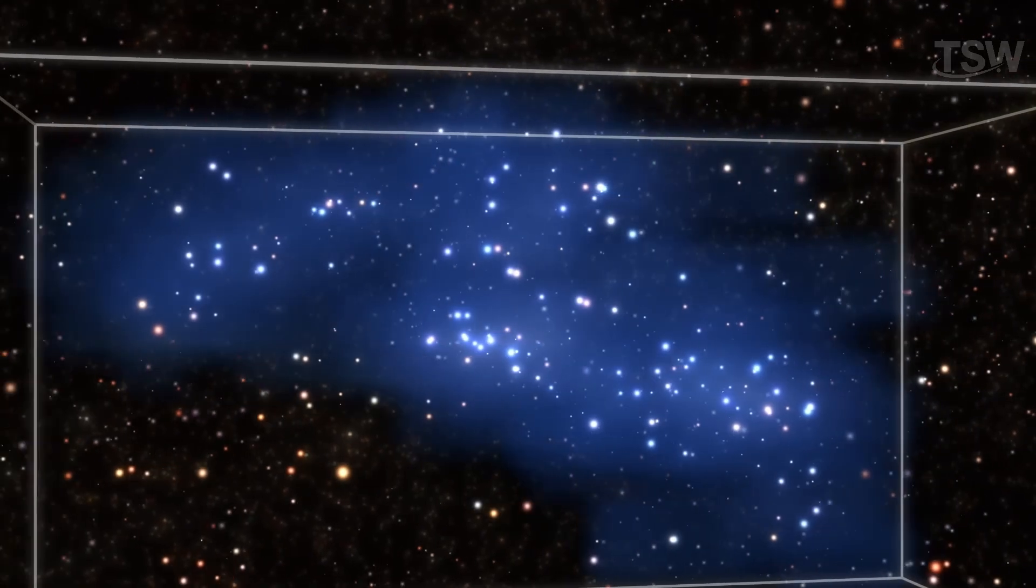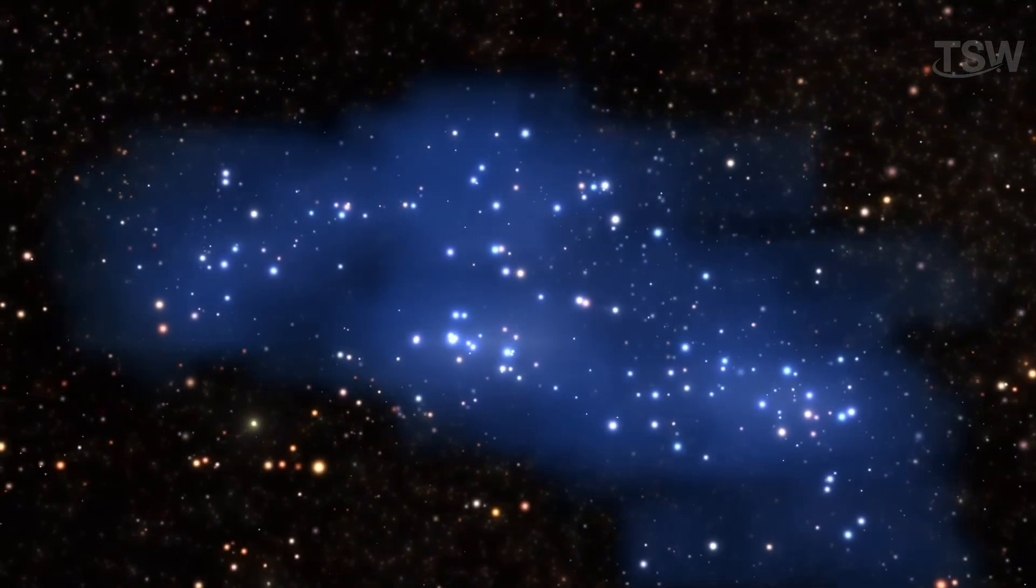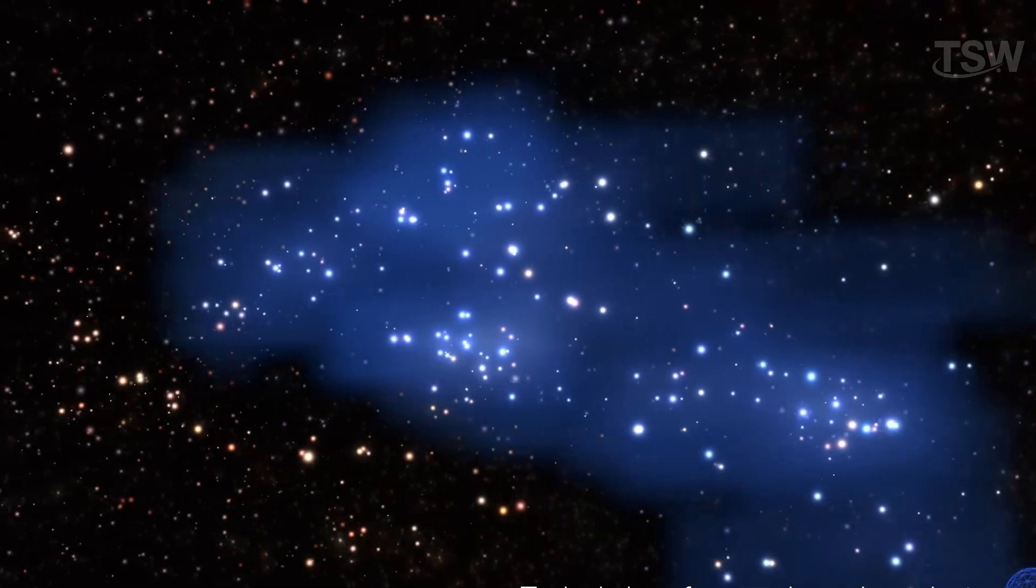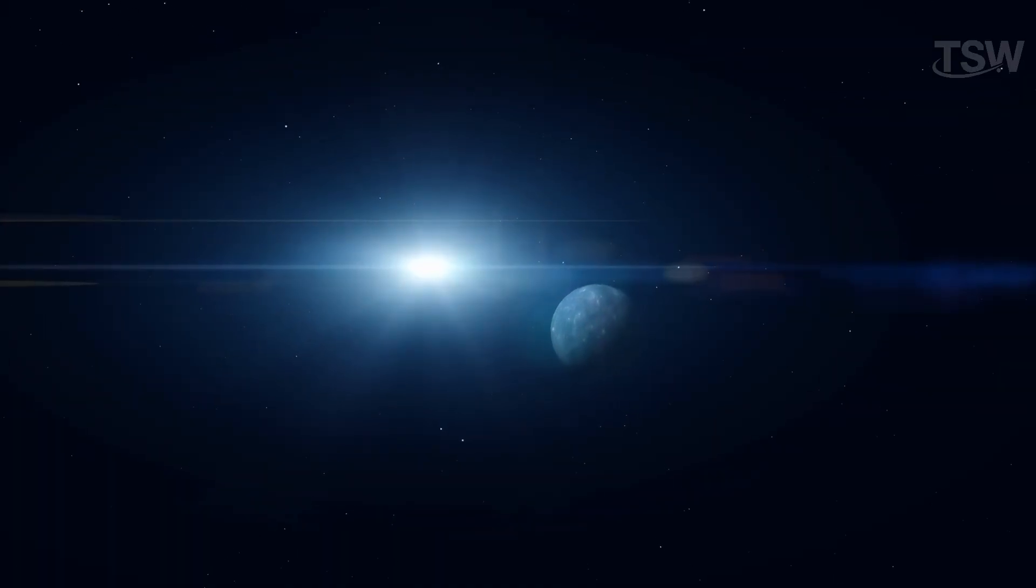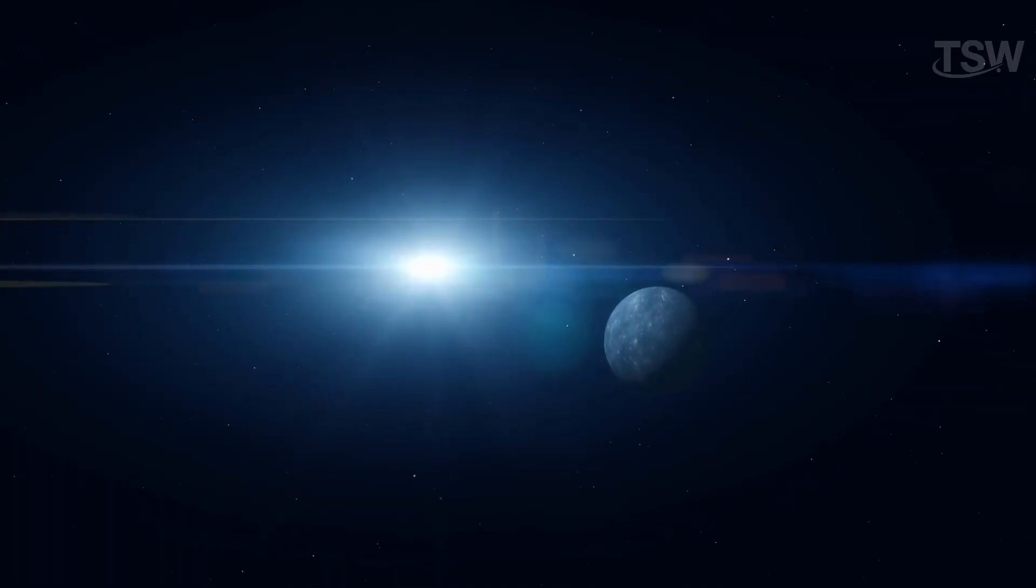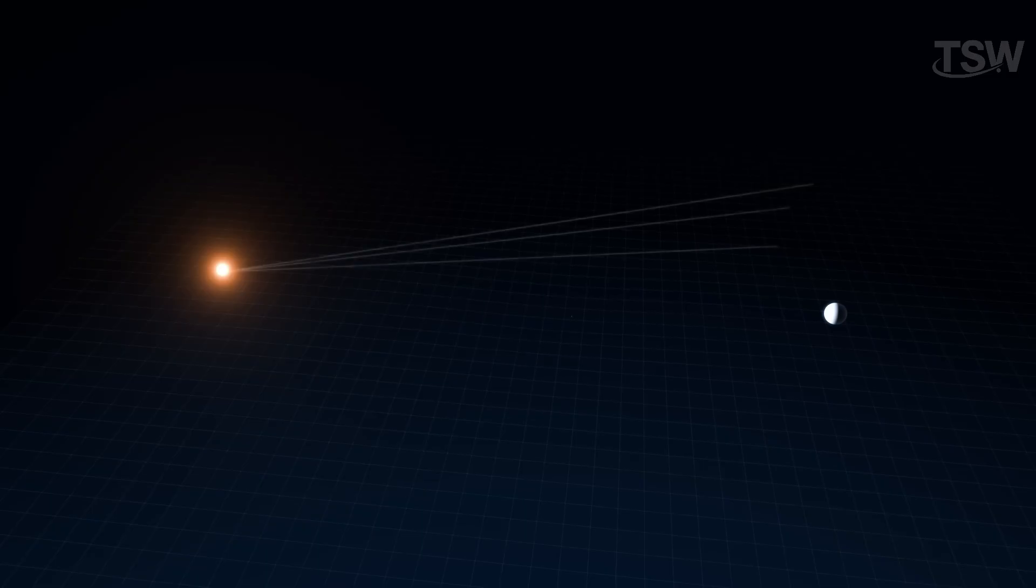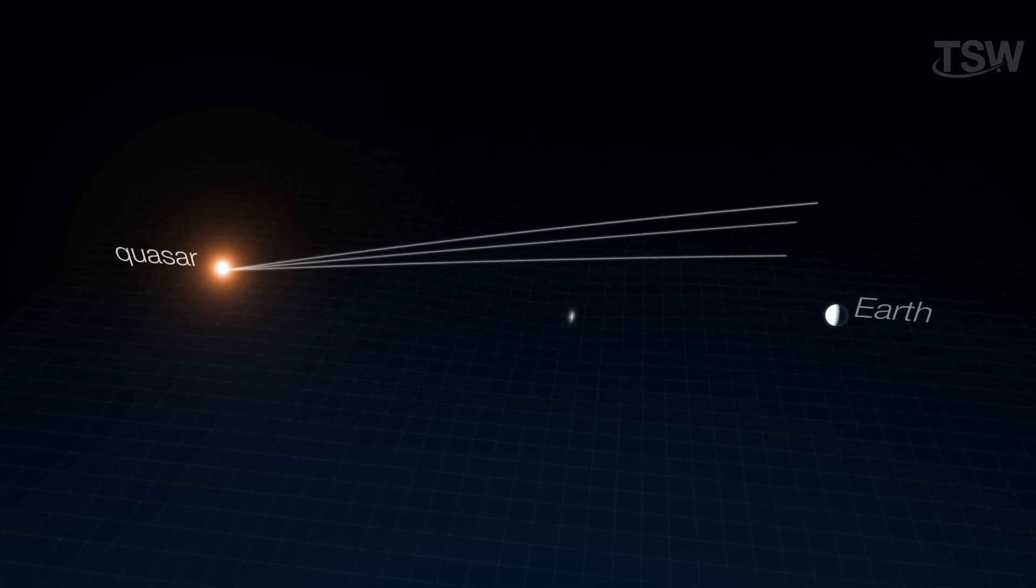When astronomers analyze how light from distant galaxies behaves as it passes through certain regions of space, they can map where this dark matter is, even though it's completely invisible to our eyes. It's like detecting something hidden just by watching how the environment around it reacts. And that's only possible thanks to gravitational lensing.